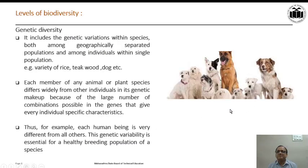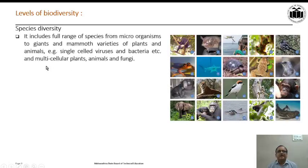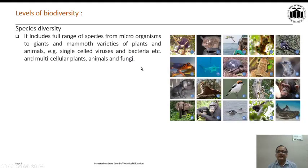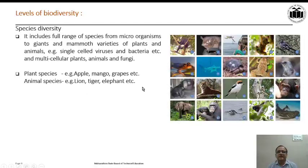Here, different species of dogs are shown. The second level of biodiversity is Species Diversity. Species includes the full range from microorganisms to giant and mammoth varieties of plants and animals — for example, single-celled viruses and bacteria, and multicellular plants, animals, and fungi. Plant species examples include apple, mango, grapes, etc. Animal species examples include lion, tiger, elephant, cow, rat, etc.